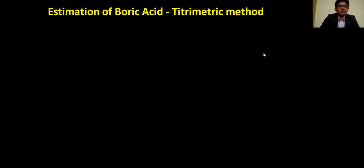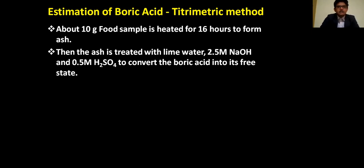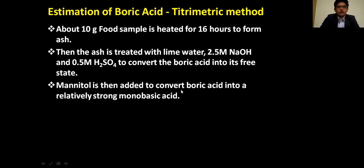About 10 grams of food sample is first heated for 16 hours to form ash. The ash is then treated with lime water, 2.5 molar NaOH, and 0.5 molar H2SO4 to convert the boric acid into its free state. Then mannitol is added to convert boric acid into a relatively strong monobasic acid.